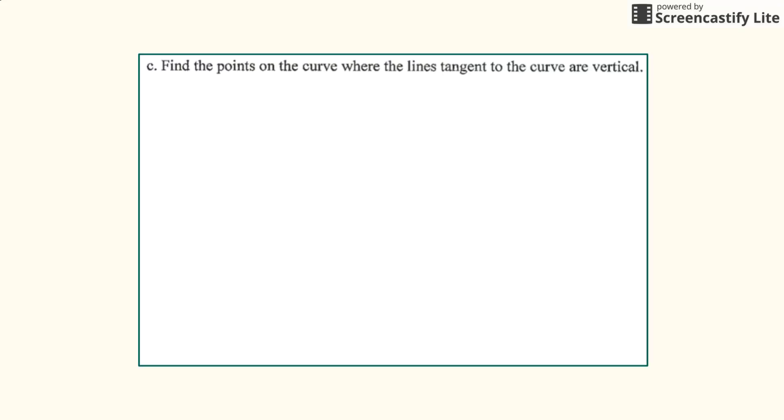Here we need to find the points at which the curve has vertical slopes. In order for it to have a vertical slope, the slope must be undefined, which means that the denominator would be 0 since you can't divide by 0. So the denominator of x plus 2y needs to be set to 0.